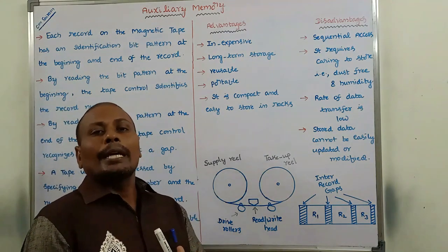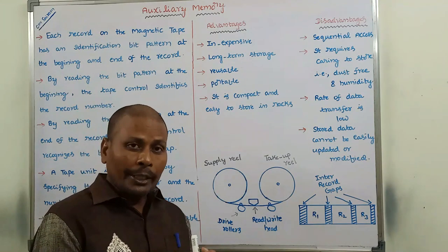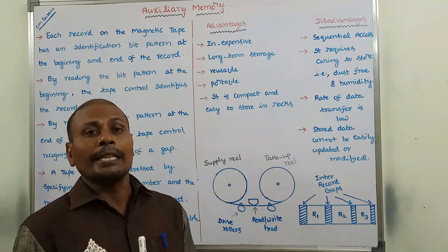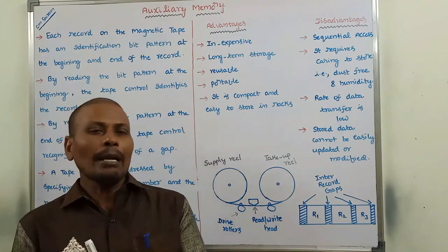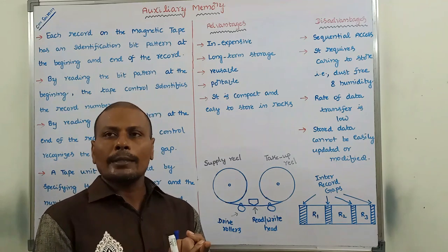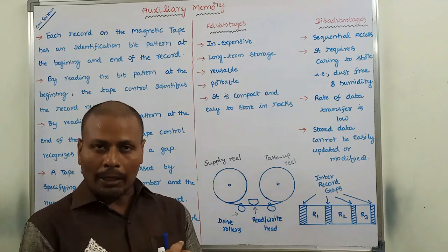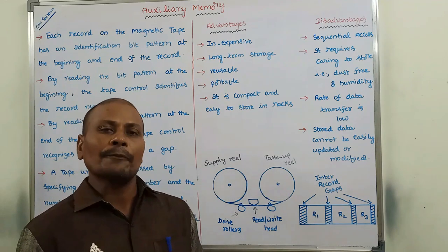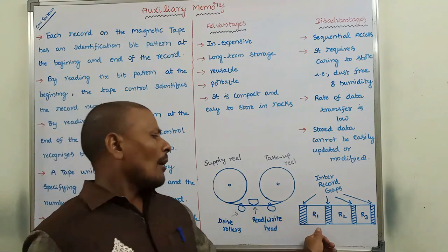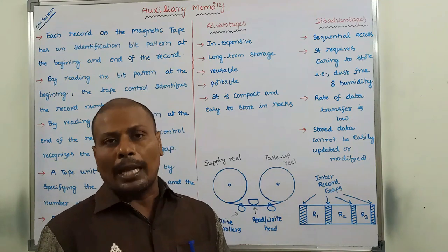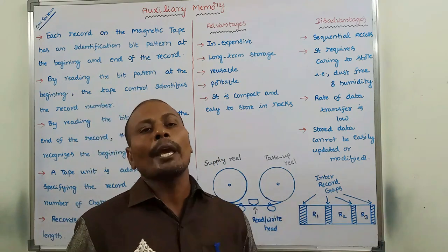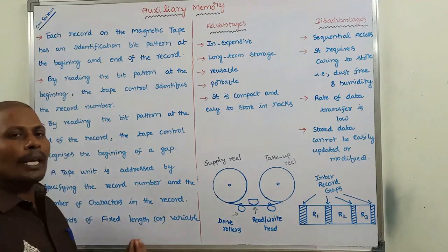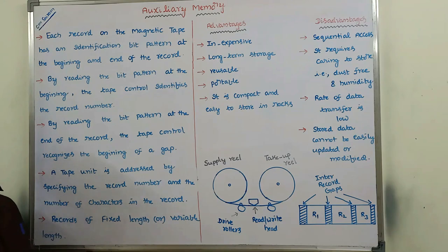A magnetic tape unit can be addressed by using the record number and the number of characters within the record. A magnetic tape can be addressed by using these two factors. These records can be of a fixed length or a variable length — some magnetic tapes follow a fixed length record and some follow a variable length record.